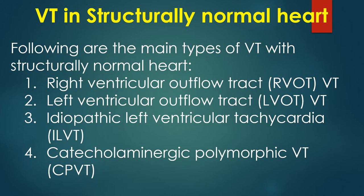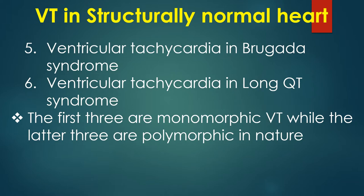The main types of VT with structurally normal heart are: 1. Right ventricular outflow tract VT; 2. Left ventricular outflow tract VT; 3. Idiopathic left ventricular tachycardia; 4. Catecholaminergic polymorphic ventricular tachycardia; 5. Ventricular tachycardia in Brugada syndrome; and 6. Ventricular tachycardia in long QT syndrome. The first three are monomorphic VT while the latter three are polymorphic in nature.